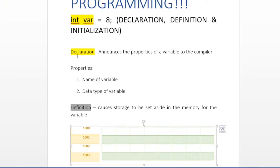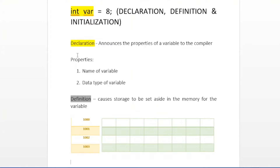Definition causes storage to be allocated in the memory for the variable. With declaration, I am just telling the compiler the name of my variable and what type of information it will be holding. No storage in memory has been allocated till now. Only when we define the variable, the memory is set aside — the storage is set aside in memory for the variable. Like at address 1003, a block will be assigned to store the information for this variable.